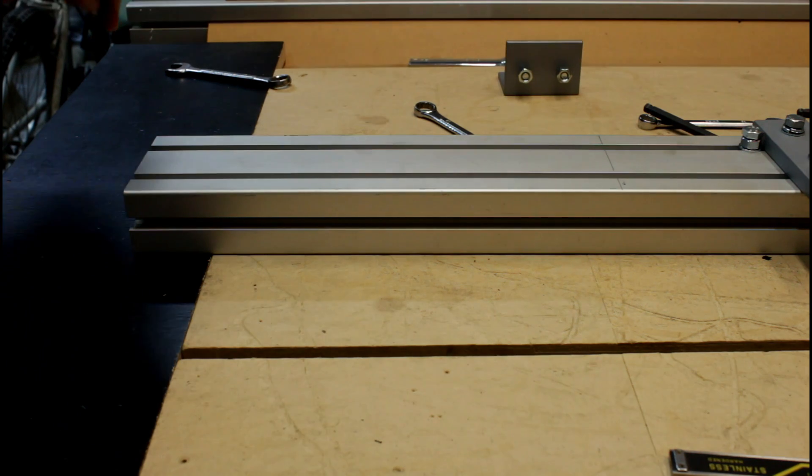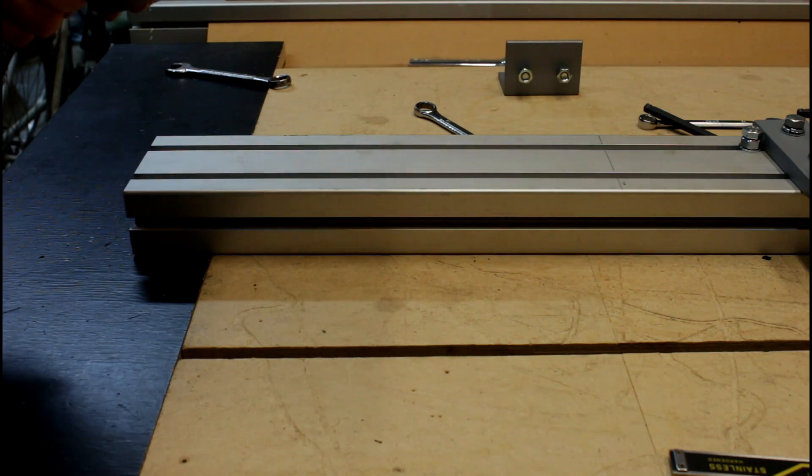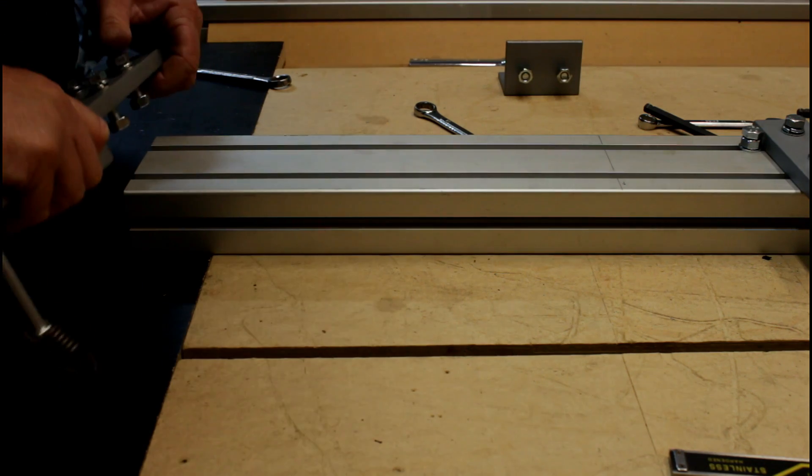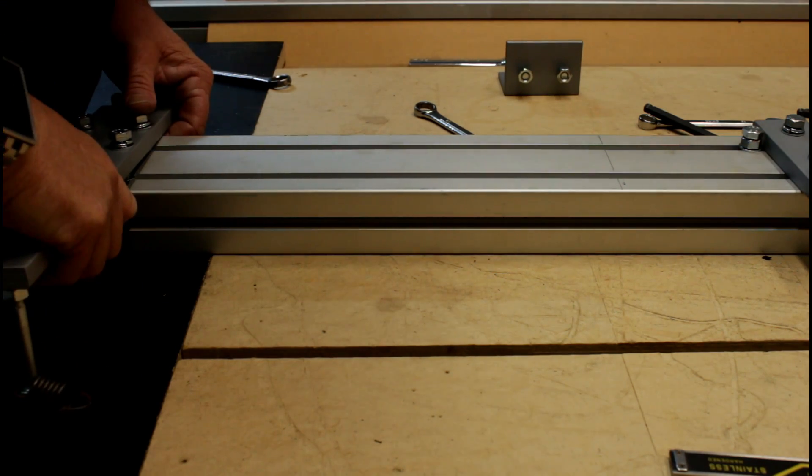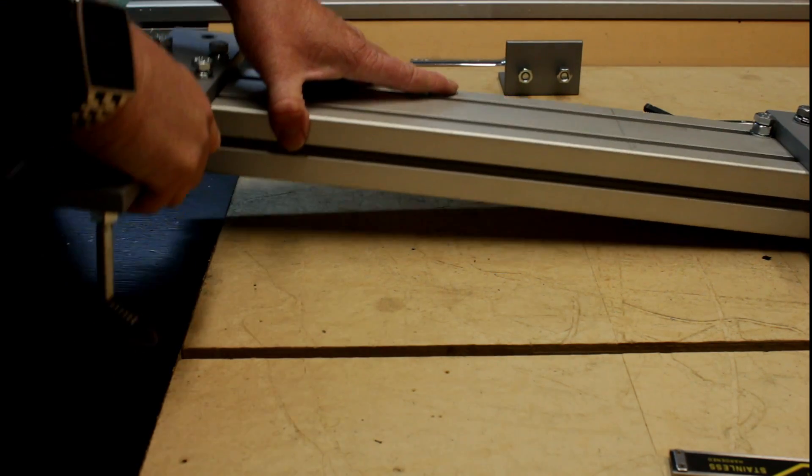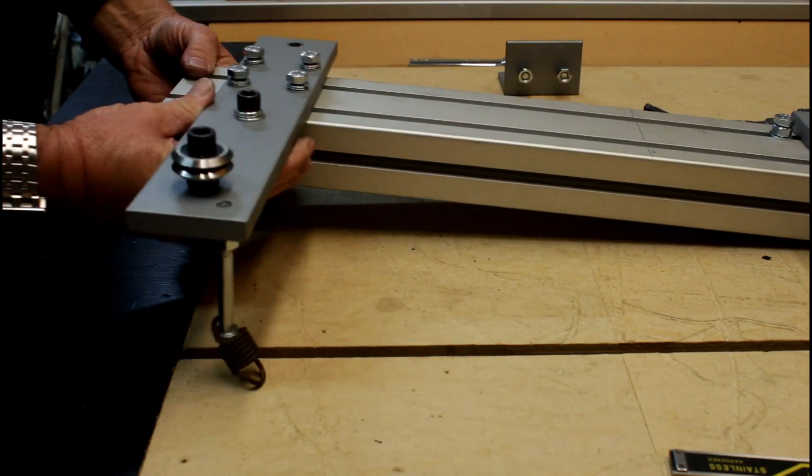Next, I'm going to put in the top V-bearing rail. Again, it simply slides down. In hindsight, maybe I should have left that long bolt off, as it's a bit of a nuisance at the moment and can be put on at any time.